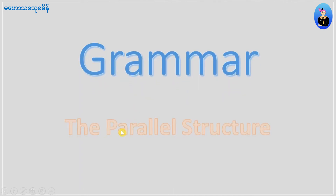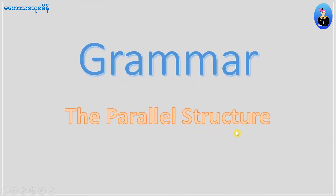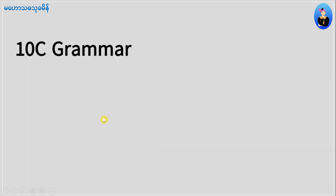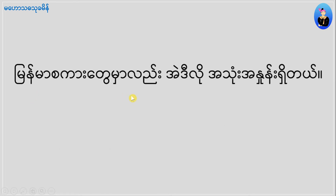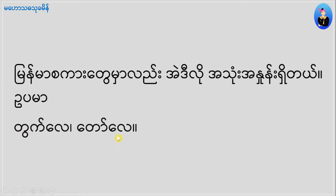Grammar: The Parallel Structure, Part 7. TNC Grammar Parallel Structure. The structure uses 'the more' or 'the less' with a comparative adjective, followed by a comma.